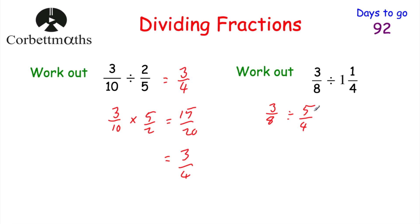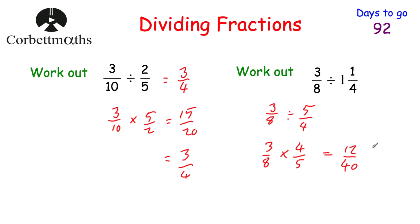Now we're going to multiply by the reciprocal. So we take our 3 eighths and multiply by the reciprocal of 5 quarters, which is 4 fifths — just flipping it over. So 3 times 4 is equal to 12, and 8 times 5 is equal to 40. That would be 12 fortieths. Both numbers are divisible by 4: 12 divided by 4 is 3, and 40 divided by 4 is 10. So 3 eighths divided by 1 and a quarter would be 3 tenths. And that's it.